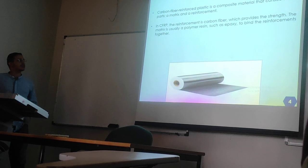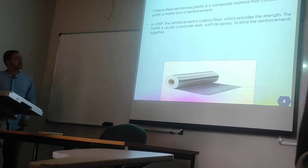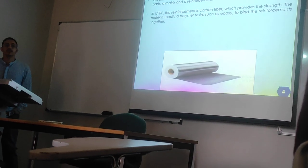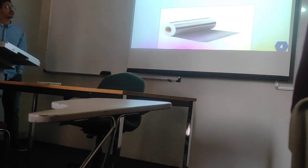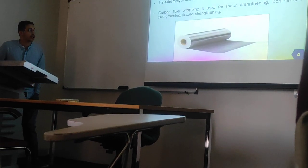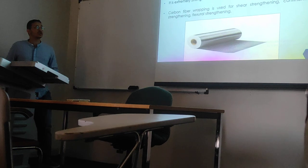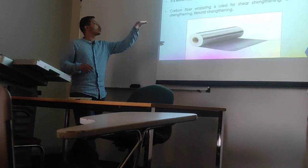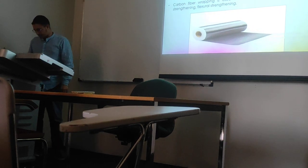In CFRP, the reinforcement is the carbon fiber, and the matrix is usually the polymer resin. It is an extremely strong and light fiber reinforced plastic. Carbon fiber wrapping is used for shear strengthening, confinement strengthening, and flexural strengthening.